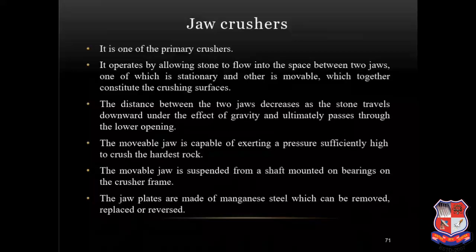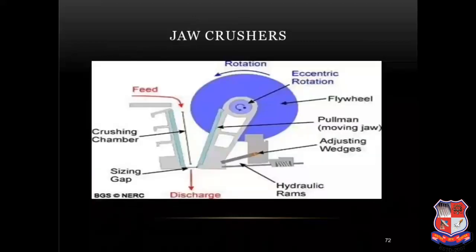Jaw crushers are one of the primary crushers. They operate by allowing stone to flow into the space between two jaws, one of which is stationary and the other is movable, which together constitute the crushing surfaces. The distance between the two jaws decreases as the stone travels downwards under gravity and ultimately passes through the lower opening. The movable jaw is capable of exerting pressure sufficiently high to crush the hardest rock. The movable jaw is suspended from a shaft mounted on bearings on the crusher frame. The jaw plates are made of manganese steel and can be removed, replaced or reversed.